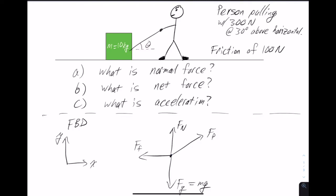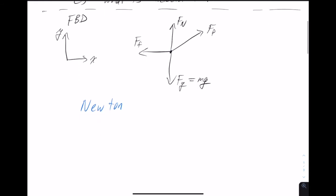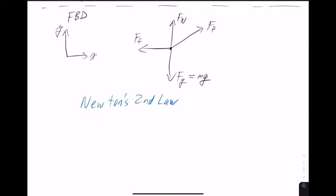The purpose of making a free body diagram is to allow us to use Newton's second law. Newton's second law says that f net — which is a vector — is equal to the mass of the object times its acceleration, which is also a vector. Because that's a vector, it can be broken down into x and y components. We deal with each component separately: f net in the x direction equals mass times acceleration in x, and f net in the y direction equals mass times acceleration in y.